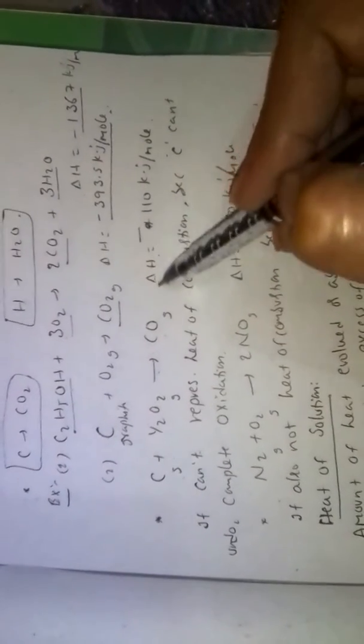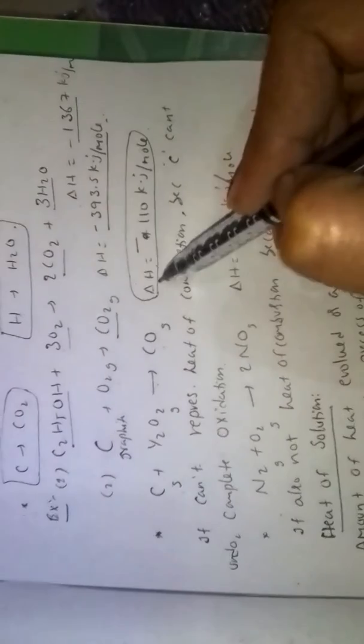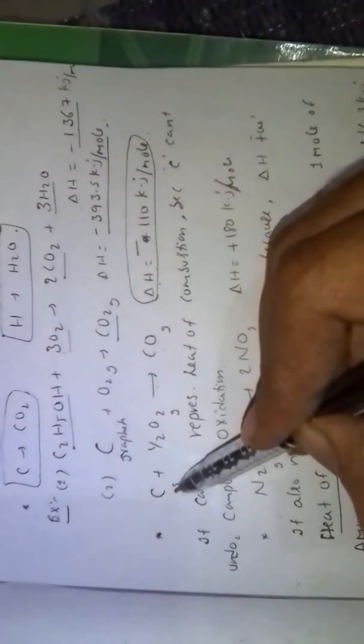here delta H value cannot represent the heat of combustion because carbon is not completely oxidized.